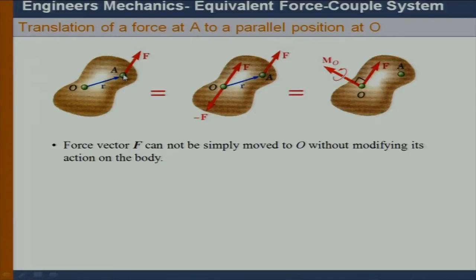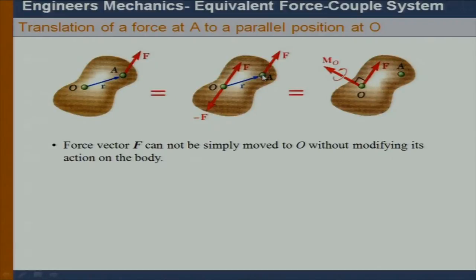To do this, suppose I have a rigid body and I apply a force F. Can I translate this force to a point O? Ideally, I should add a positive force and a negative force whose line of action is the same as that of F. So ultimately now I have a couple — F and negative F — that will create a couple moment M_O, along with the force which is now translated at O.